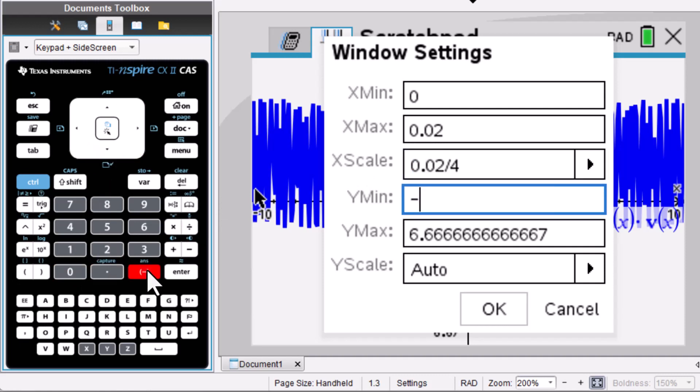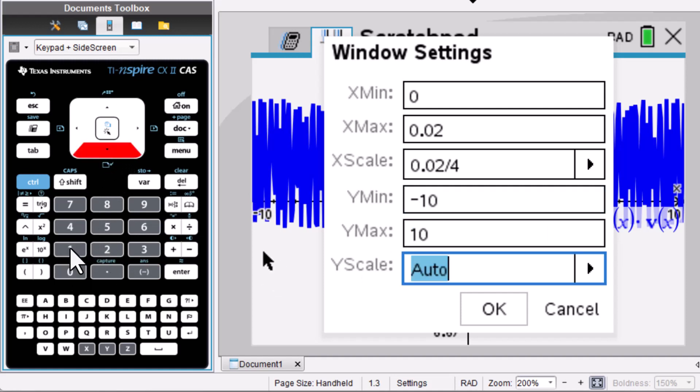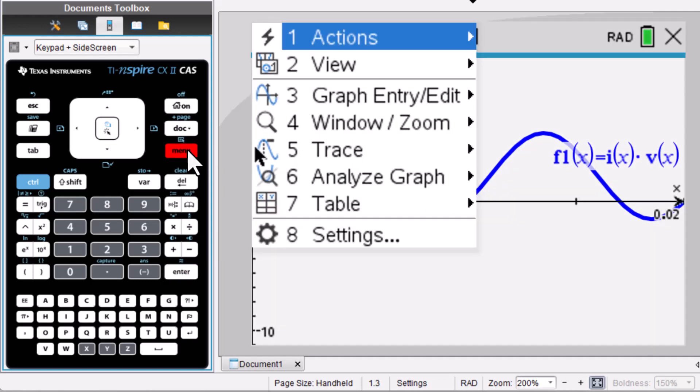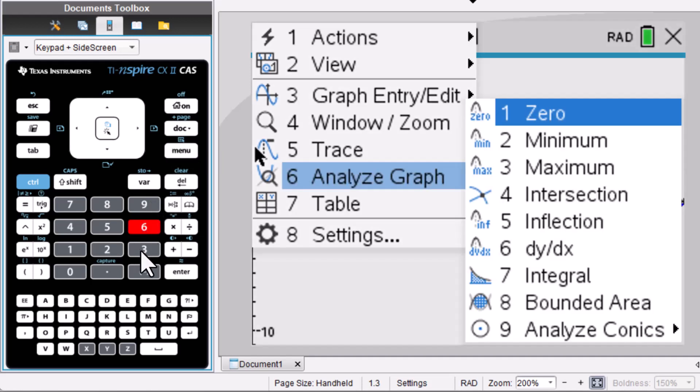Let's put -10 for minimum. Let's put 1 for the scale. Normally we use maximum value or minimum value divided by 10 to get the scale. For trig function, scale will be maximum value divided by 4. Then enter. Let's figure out the maximum and minimum. Go to menu 6, maximum.